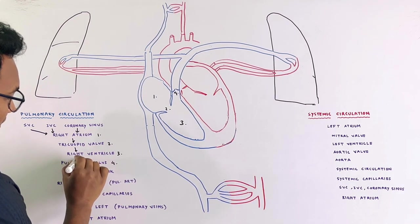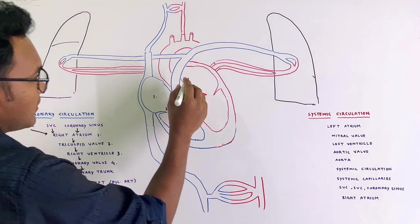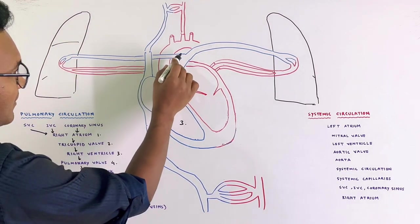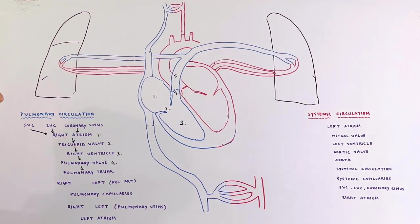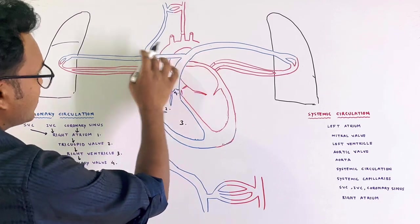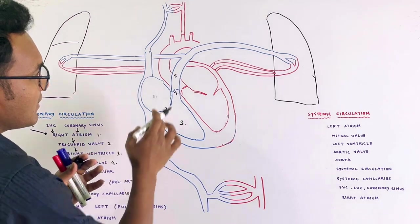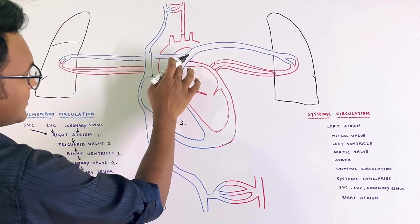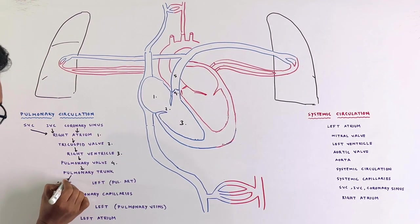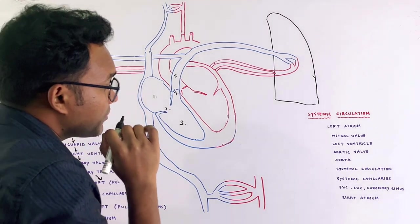The pulmonary valve leads to the pulmonary trunk. The pulmonary trunk gives rise to the pulmonary artery, which divides into the right pulmonary artery and left pulmonary artery, carrying deoxygenated blood to both lungs.